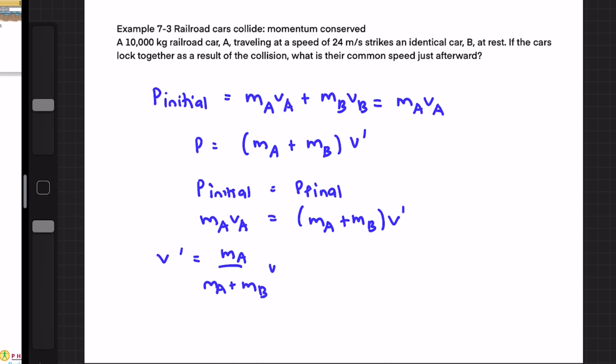And now we're going to substitute numbers inside where our mA is given as 10,000 kilograms, divided by mA of 10,000 kilograms plus mB of 10,000 kilograms because all the masses are the same, times vA which we already know is 24 meters per second.